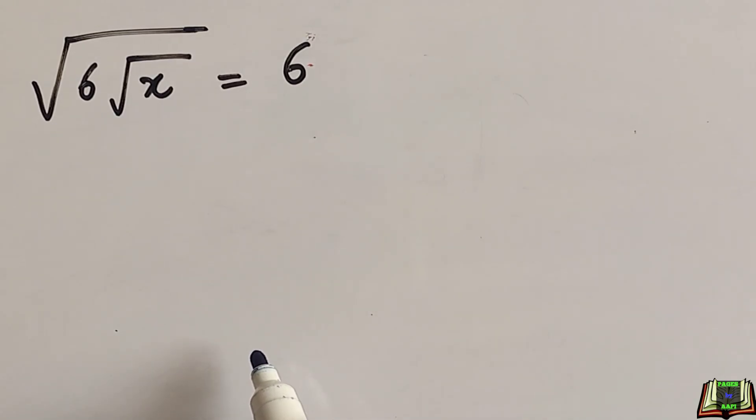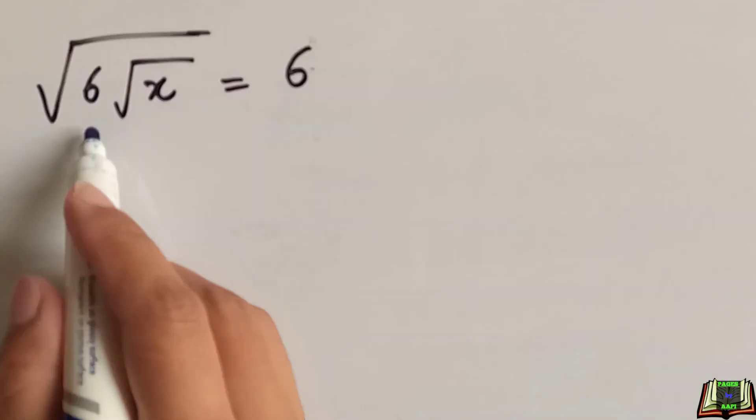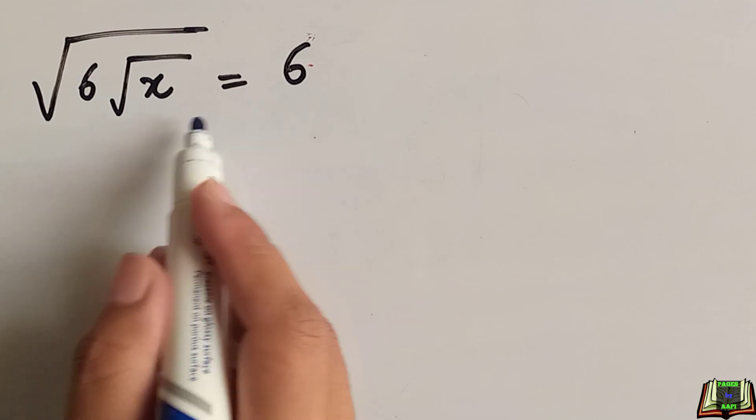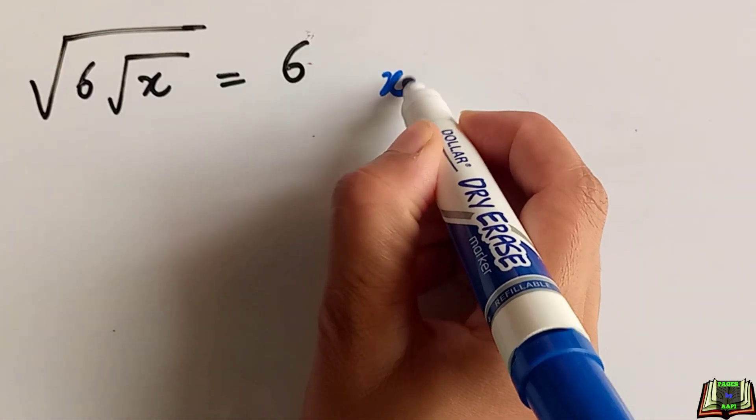Welcome back. Let's solve this radical problem. If square root of 6 times square root of x is equal to 6, then we are supposed to find the value of x in this question.